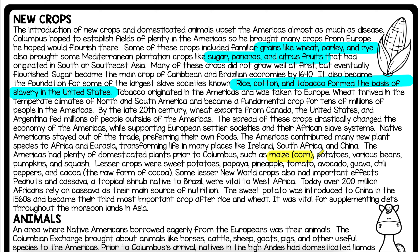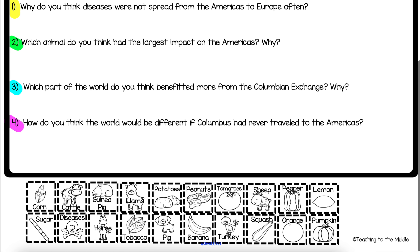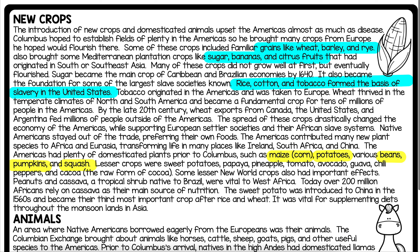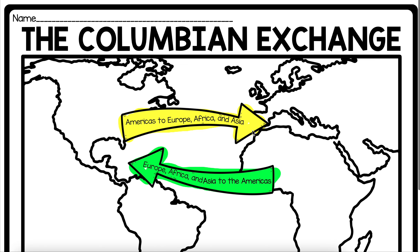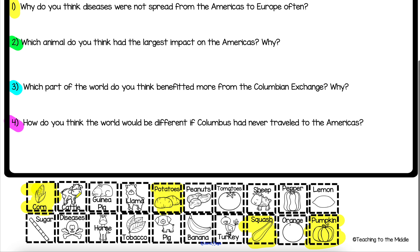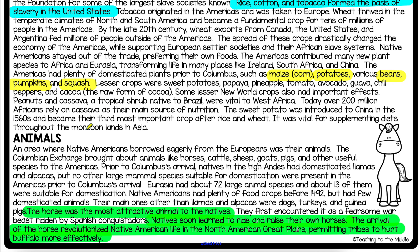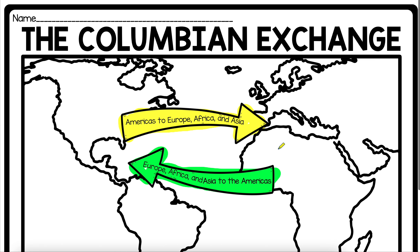Corn, potatoes, beans, pumpkins, and squash are all going to be yellow — you'll cut those out and they go from the Americas to Europe. Next we have cattle. Looking in the animals section: the Columbian Exchange brought animals like horses, cattle, sheep, goats, pigs, and other useful species to the Americas — meaning these are coming from Asia, Africa, and Europe to the Americas, so we use green. So cattle, sheep, goats, and pigs are all going to be green.